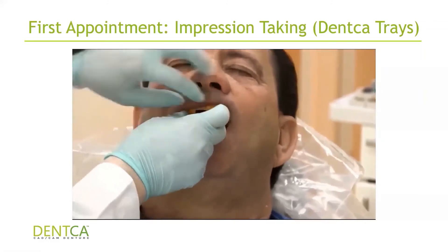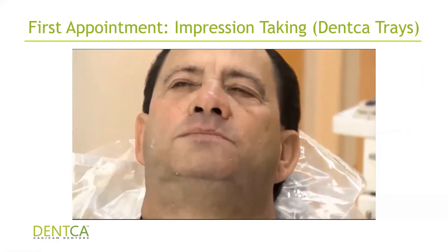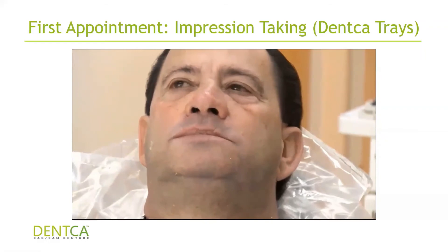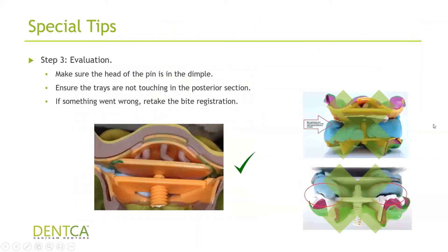Make sure the center of the dimple is right at the tip of the arrow. You can remove the clear plastic part to have a better view when setting the trays back in the patient's mouth — it's easier to see the contrast around the black color without the clear plastic on top. Return the trays into the mouth and ask the patient to lock in. It's very important that you're holding the lower tray as you're injecting the bite registration material — otherwise, especially in patients with very little bone, the tray could tilt and affect your bite. Always make sure the trays aren't touching, the pin is in the dimple, and you're holding the lower tray when putting your bite material.